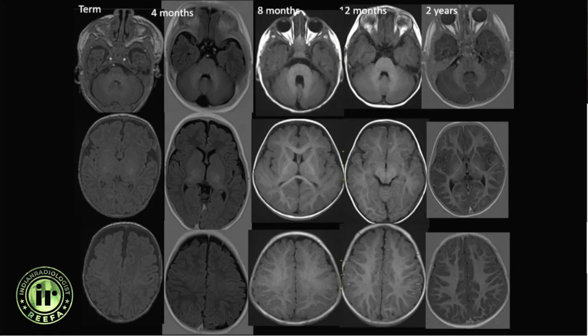In term neonates, myelination is typically seen in the dorsal brainstem, the ventrolateral nucleus of the thalamus, the posterior limbs of the internal capsule, and the perirolandic regions. By one month of age, this myelination becomes more robust and is also seen in the optic radiations in a more robust manner.